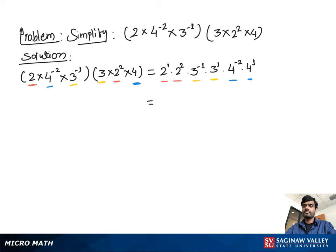So we write 2 to the (1 plus 2), 3 to the (negative 1 plus 1), and 4 to the (negative 2 plus 1). This gives us 2 cubed times 3 to the 0 times 4 to the negative 1.